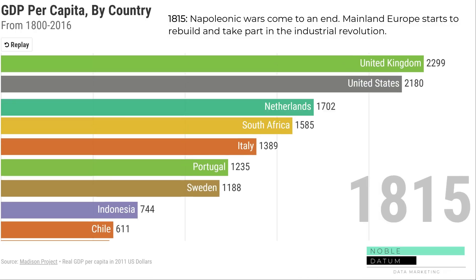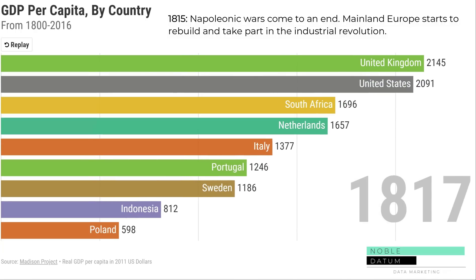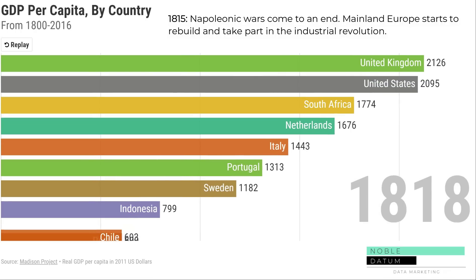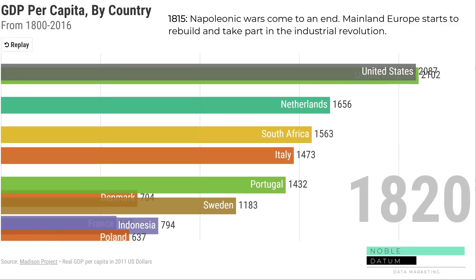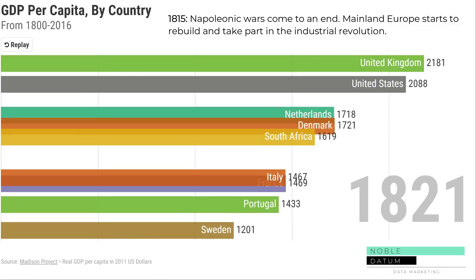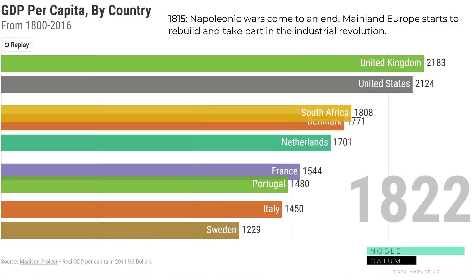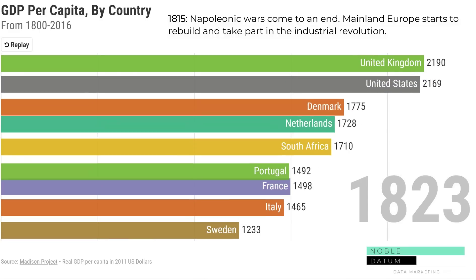In 1815 the Napoleonic Wars come to an end. Mainland Europe starts to rebuild and take part in the Industrial Revolution.